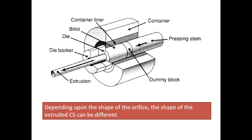Depending upon the shape of the orifice, the shape of the extruded cross section can be different. What I have shown in this schematic diagram is a cross-sectional view of an extrusion process. You can see that there is a billet, there is a die, and you can see this region is the die opening. If this is a square cross section you will get a square-shaped product; if it is a triangular-shaped or circular-shaped orifice, depending upon the cross section you will get different types of products.